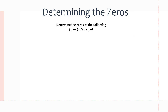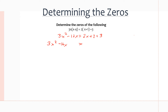First thing we want to do is expand. We use the distributive property to multiply 3x by everything in the brackets to get 3x squared minus 12x, and then 2 times everything in the brackets gives 2x plus 2 plus 3. Bringing everything to the left side, we get 3x squared, then negative 12x minus 2x gives negative 14x, and 2 plus 3 is 5, so subtracting 5 from each side gives negative 5 on this side and 0 on the other. Our equation is 3x squared minus 14x minus 5.